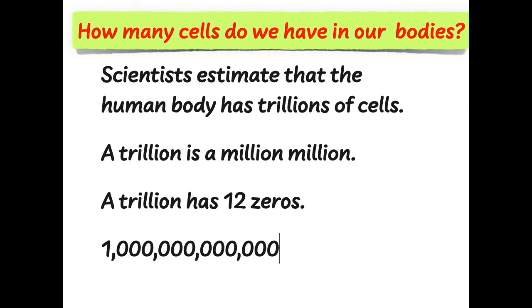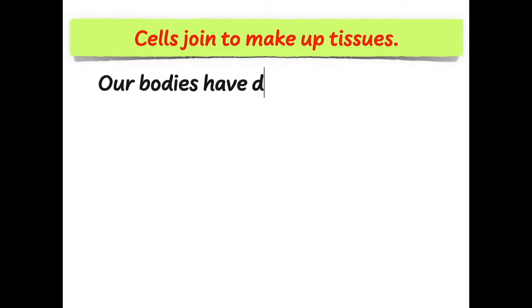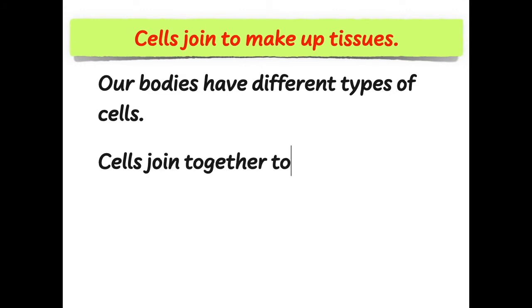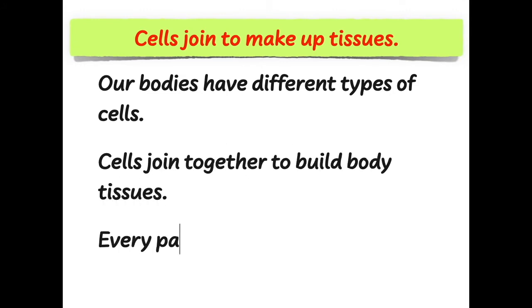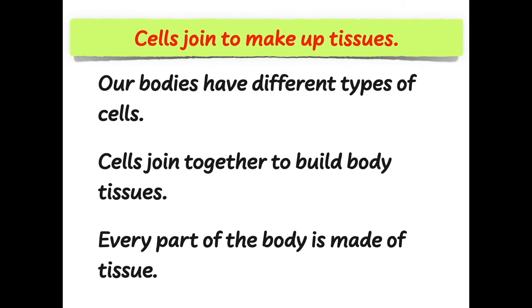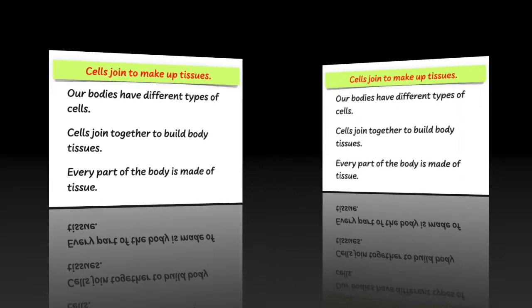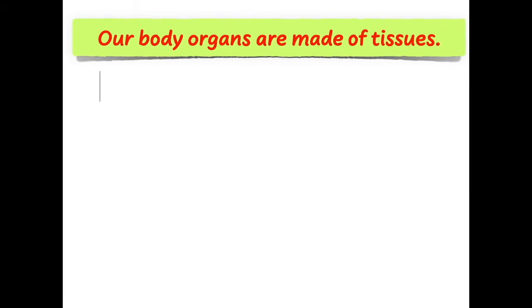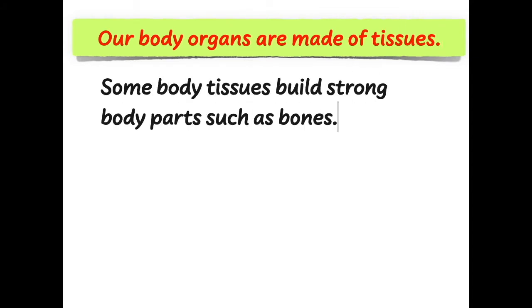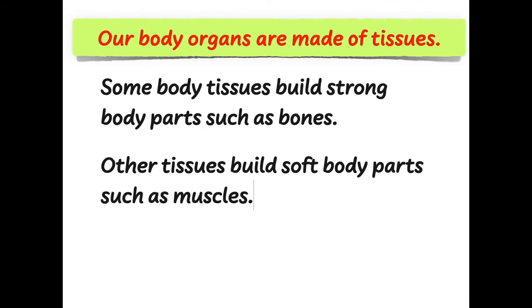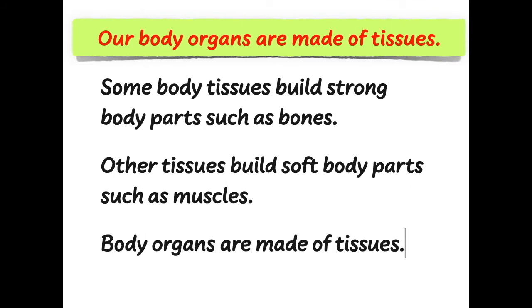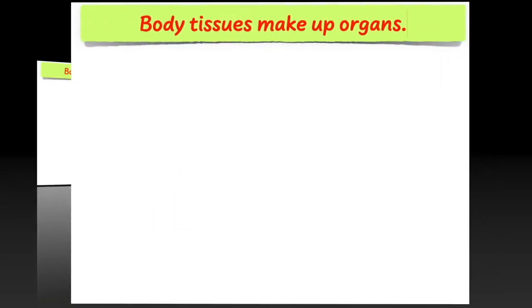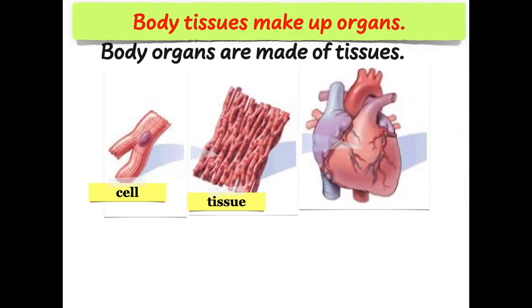Cells join together to make up tissues. Our bodies have different types of cells, and cells joined together build body tissues. Every part of the body is made of tissue. Our body organs are made of tissues. Some body tissues build strong body parts such as bones, while other tissues build soft body parts such as muscles.